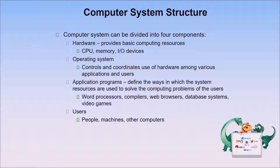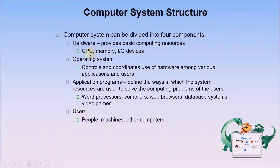Next, let's talk about computer system structure. Your computer system is divided into four components: hardware, operating system, application programs, and users. Hardware is any tangible component in a computer system — it provides basic computing resources including CPU time, memory, and I/O devices. The operating system controls and coordinates use of hardware among various applications and users. It manages the resources, similar to how a traffic controller manages car traffic on the road.